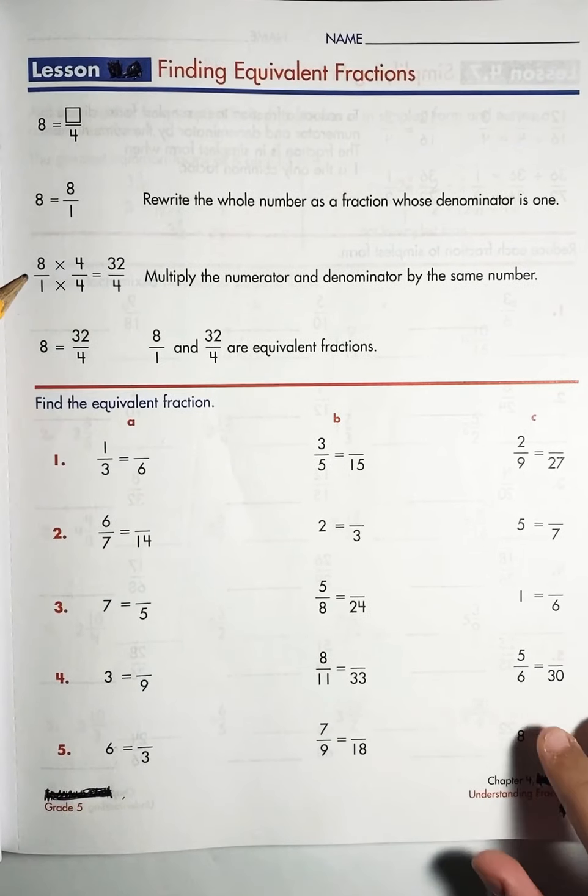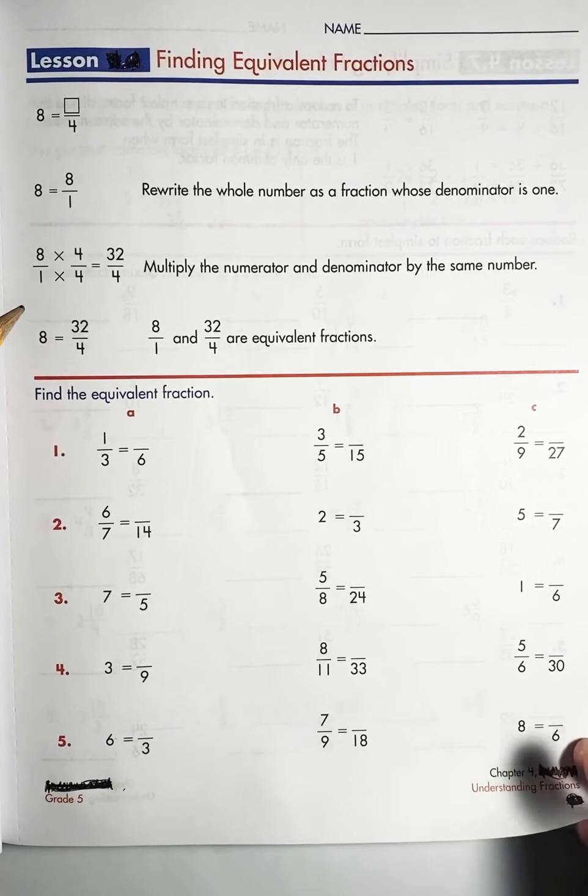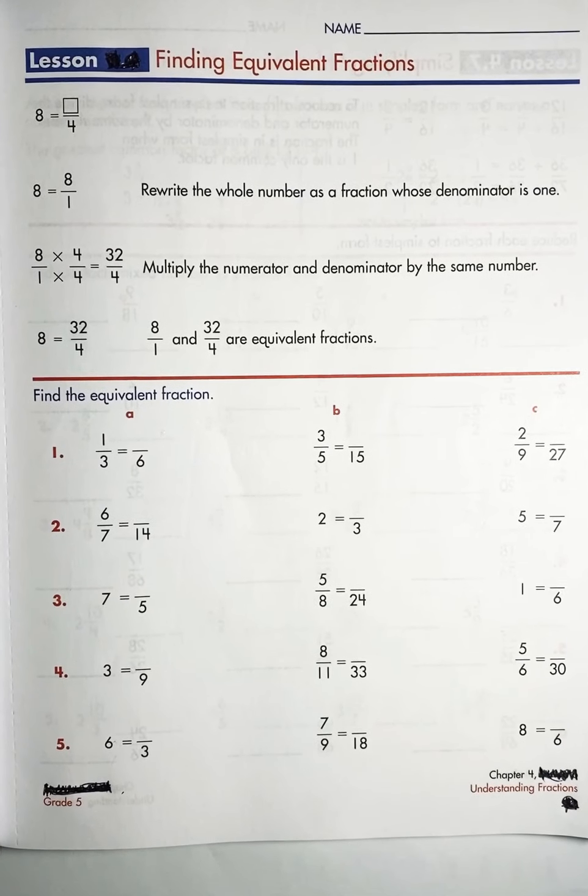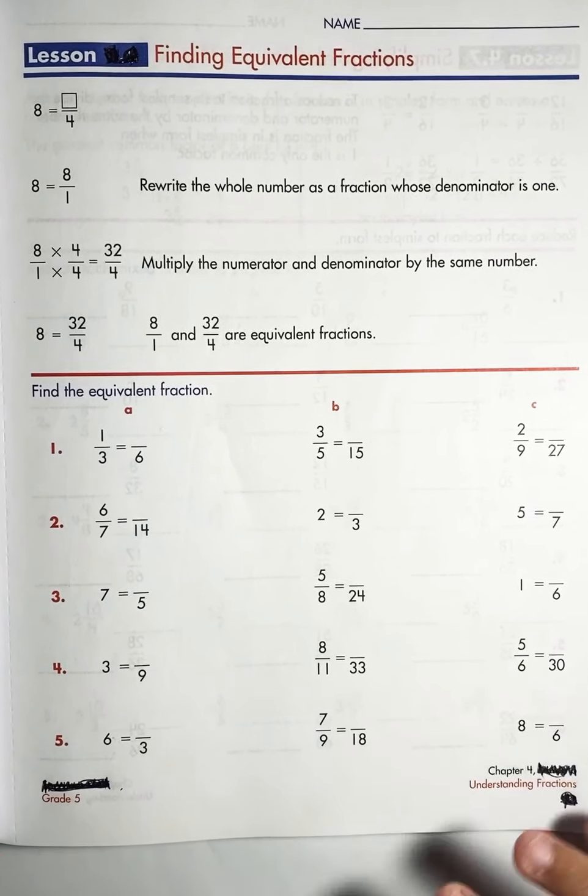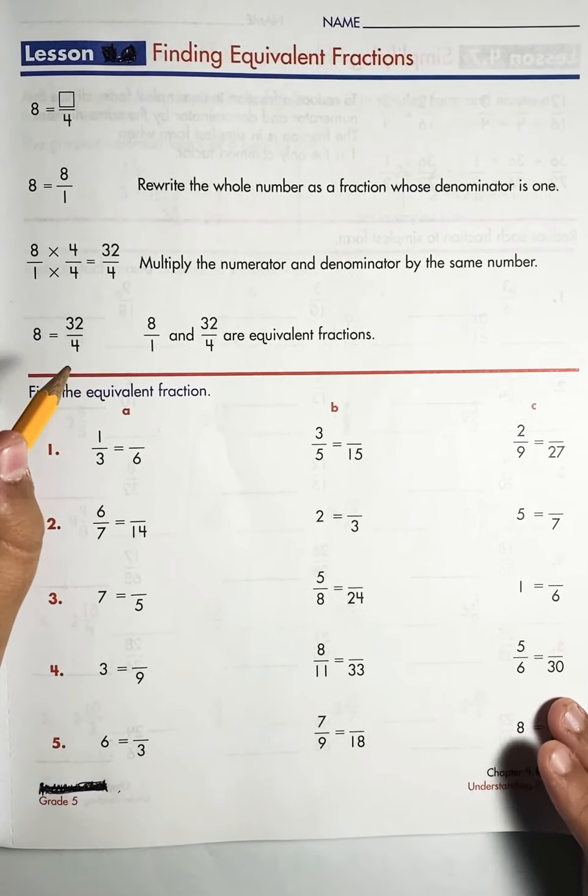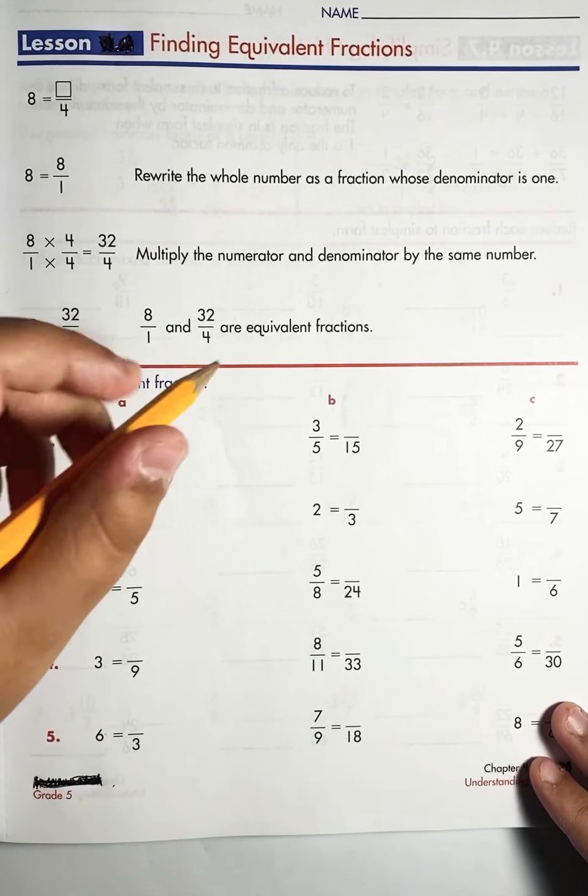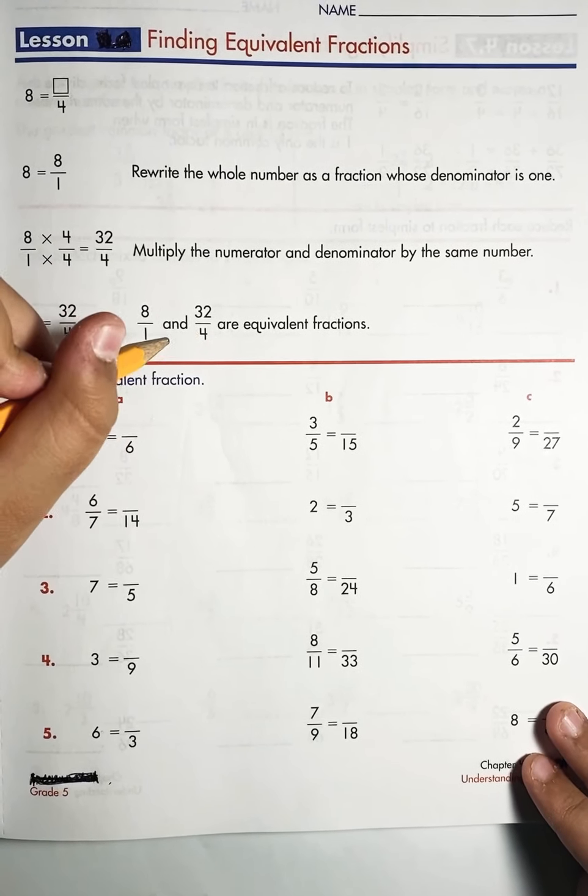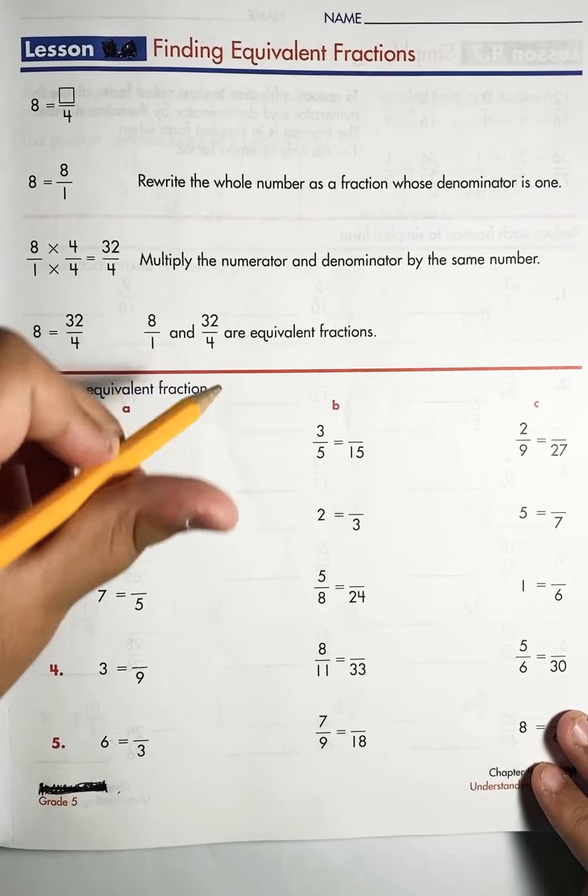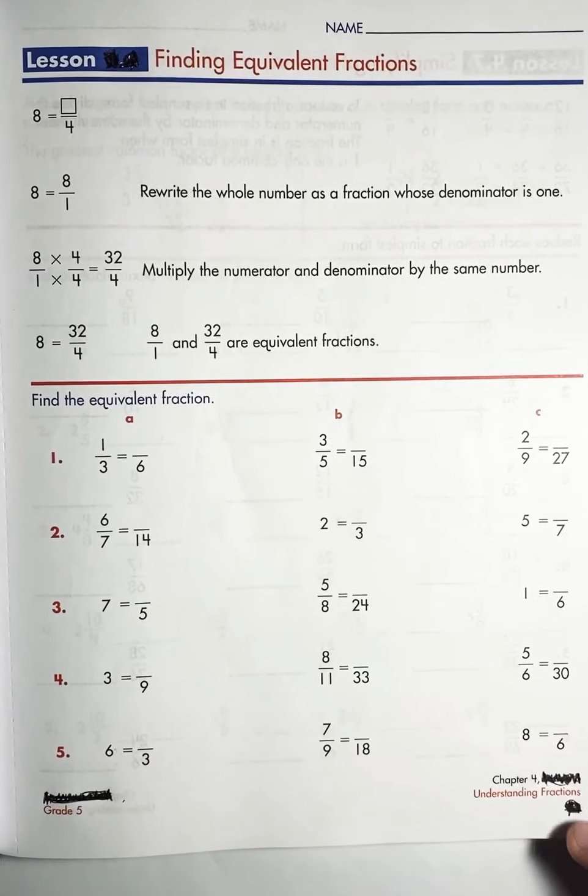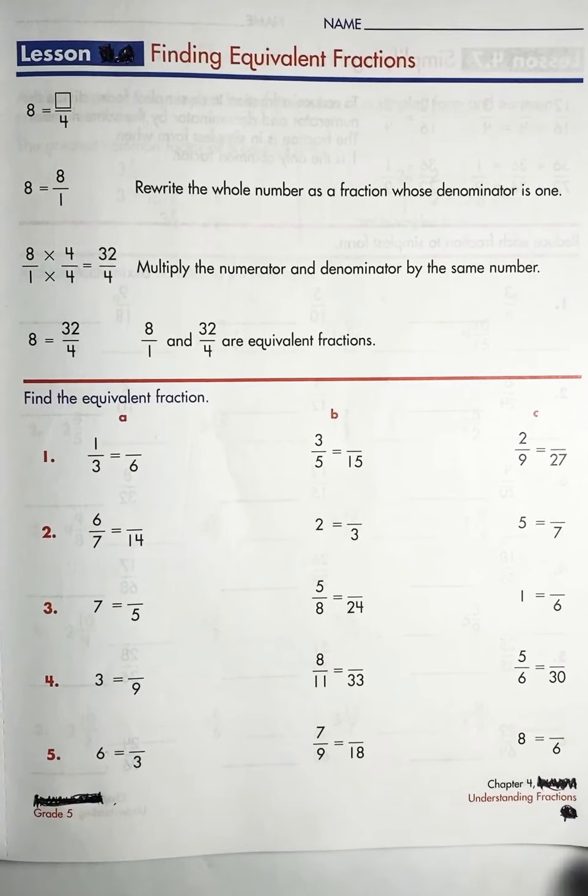So if we multiply eight by four or one by four, we have to do the upper number or the lower number the same time. So eight equals thirty-two fours. So eight ones and thirty-two fourths are equivalent fractions. Now let's go on to our equations.